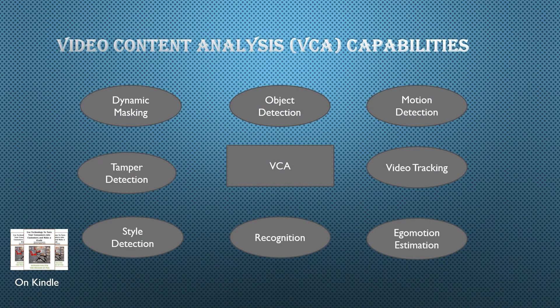Once we've identified the value streams that we want tied to our strategy, we need to understand the capabilities of each value stream. Here's a set of eight capabilities that can apply to one or more of the various value streams.